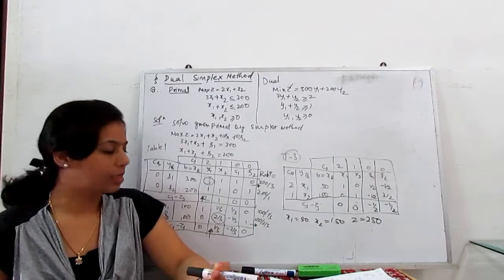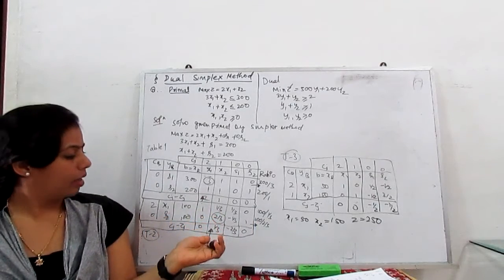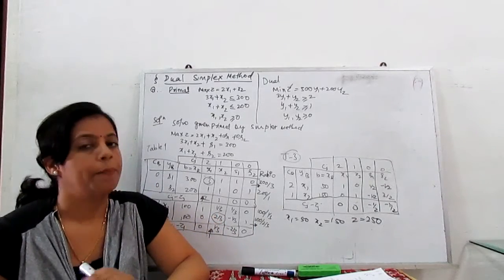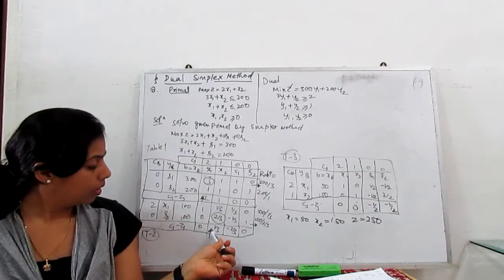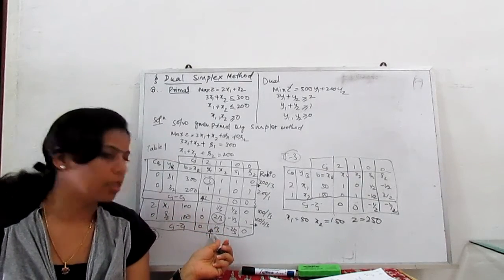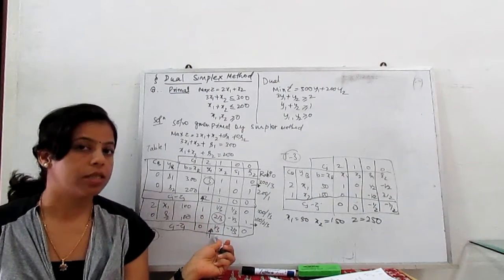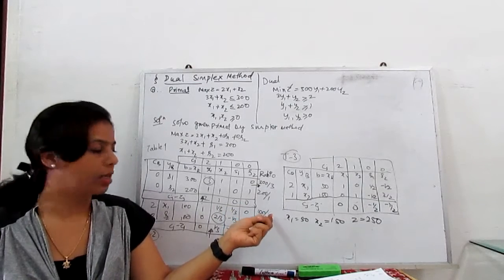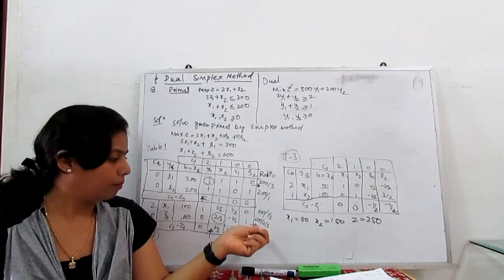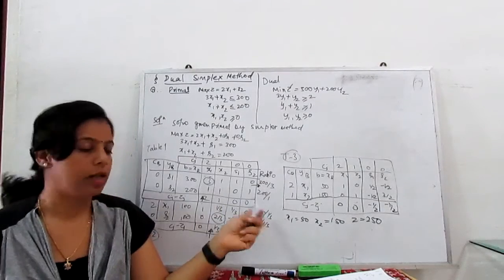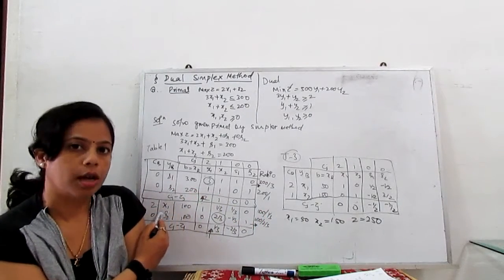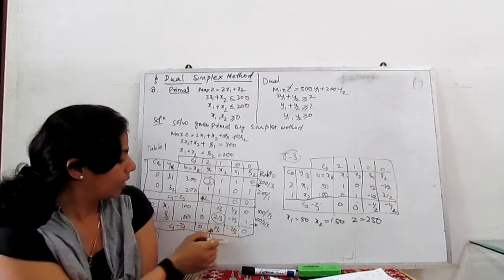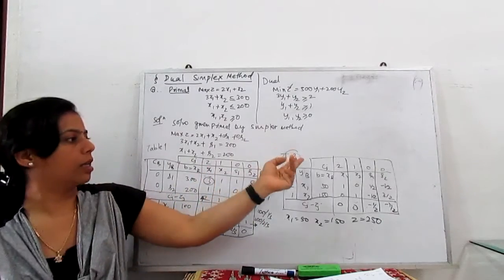We rewrite the second table. In the next table, we again calculate zj − cj. The only positive value is 1/3, so this is the entering variable. We find ratios: 100 divided by 1/3 = 300, and 300/2 = 150. The minimum ratio is 150, so s2 goes out and x2 comes in.